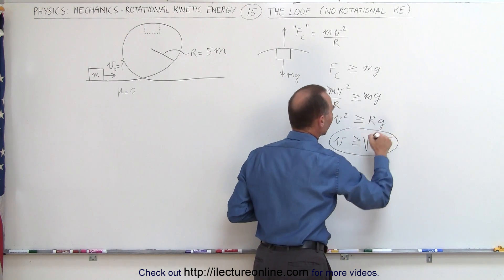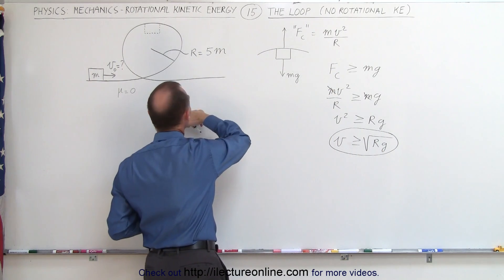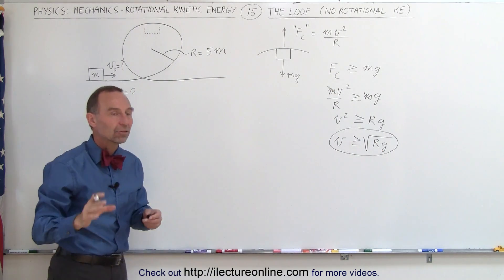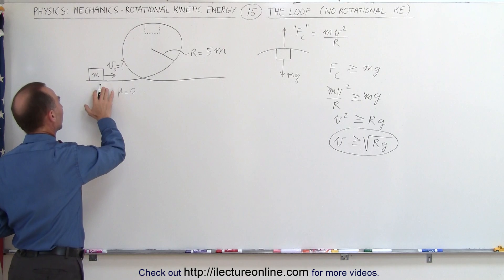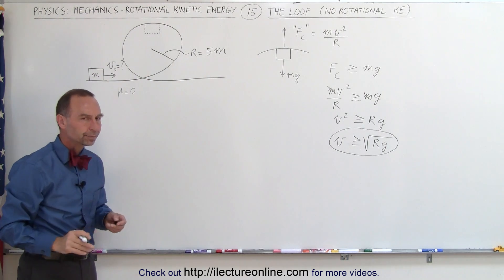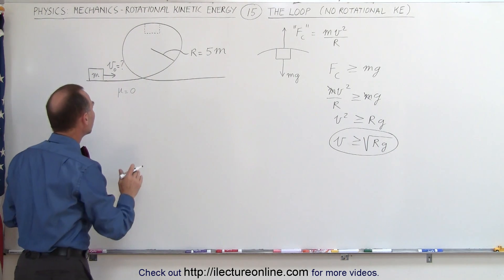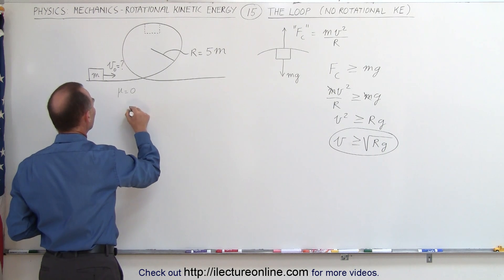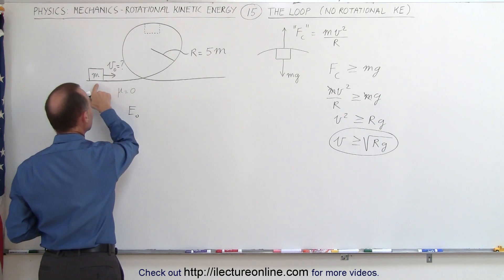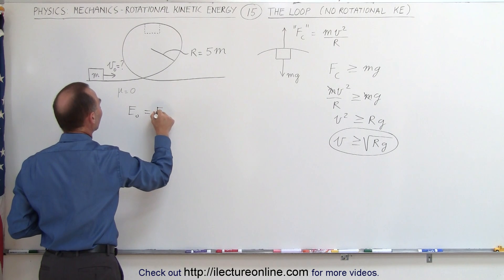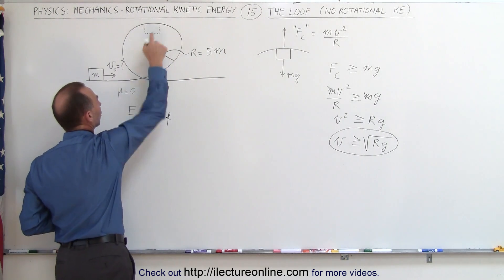We're going to take this value later and plug it into our equation to solve for the initial velocity, or the minimum initial velocity necessary so that the object will not fall down. The next thing we're going to do is equate the energy in the initial state, which is down here, to the energy at the final state, which is at the top of the loop right there.